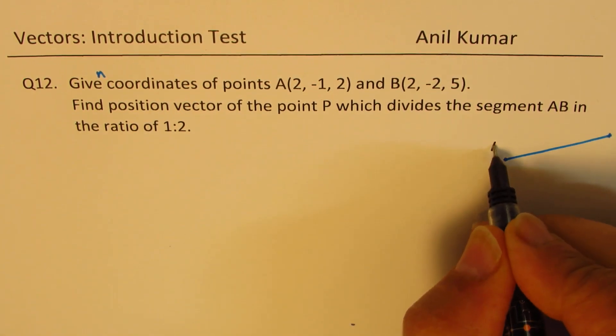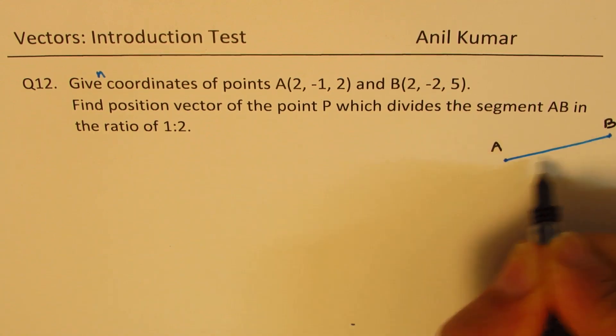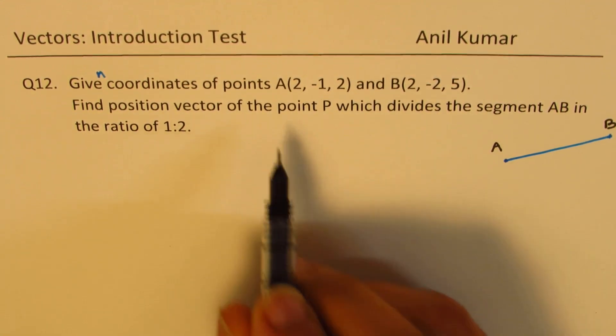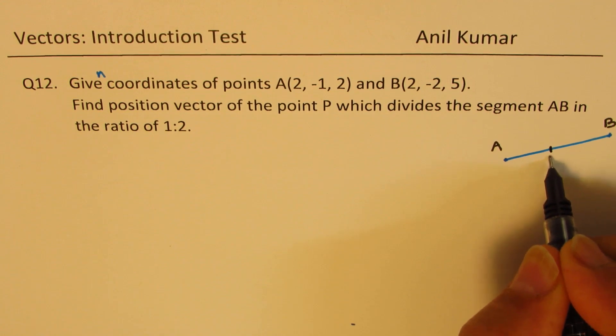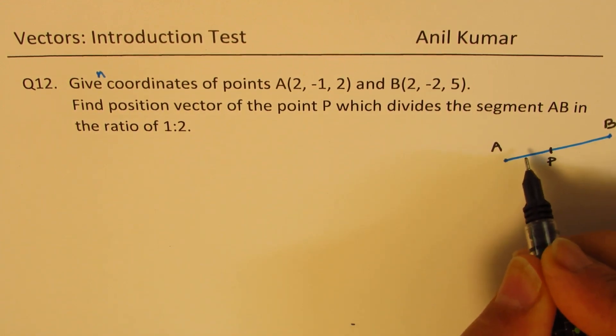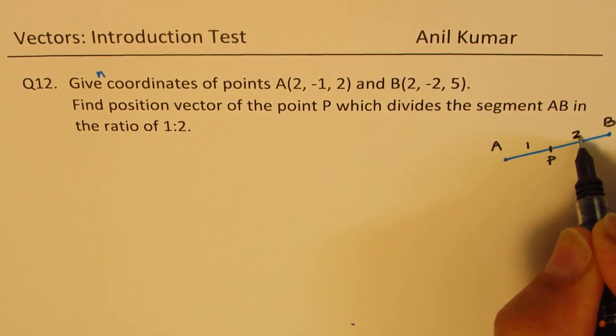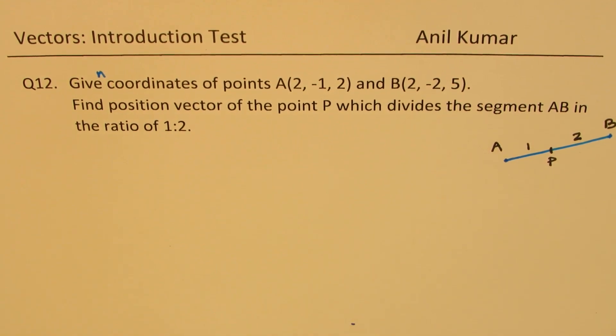Let's say the point A and B are given here on this segment, and we have a point P which divides AB in the ratio of 1 is to 2. That is the situation given to us. We need to find the position vector of this point P.